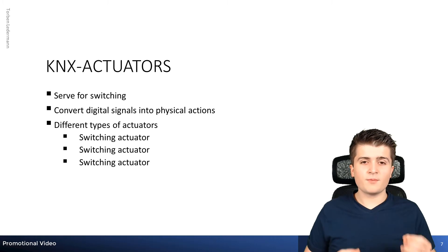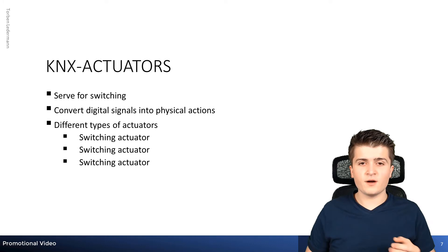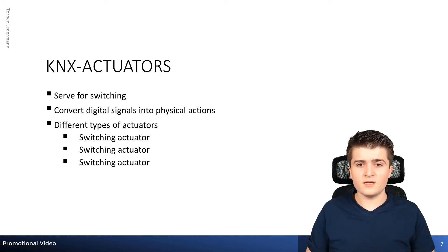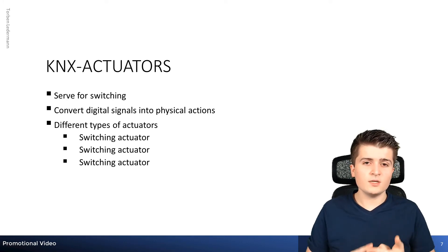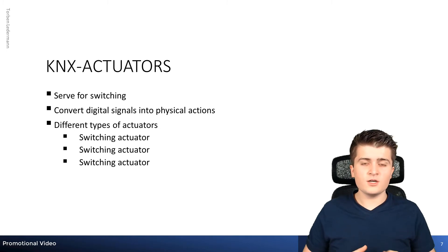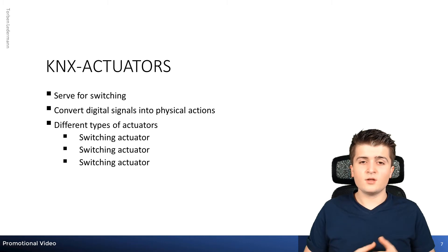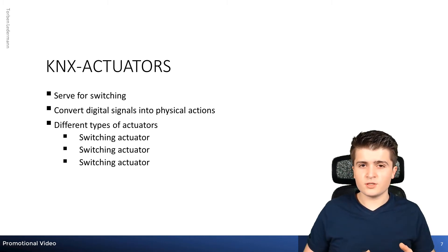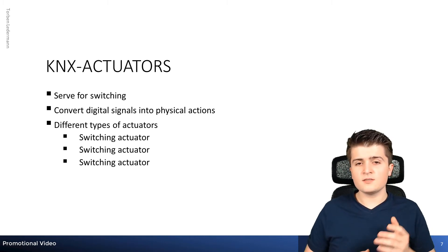It is important that you read the technical information of those actuators so that the functions you need are supported, and that you know details like maximum switching capacity and minimum load for dimming actuators. For a decentralized installation there are also flush-mounted versions of those actuators, which you can install not inside the distribution cabinet but inside the installation box.